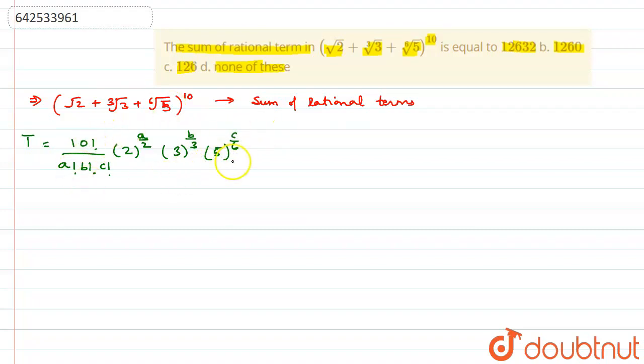Also, with this expansion, there comes a condition which says a plus b plus c must be equal to n, that is, here it will be 10. So a plus b plus c must be equal to 10.